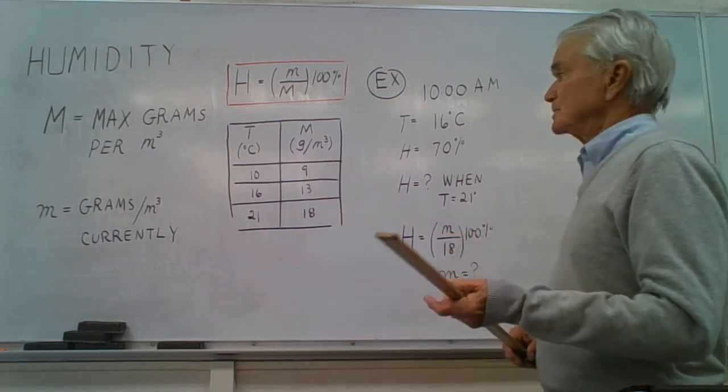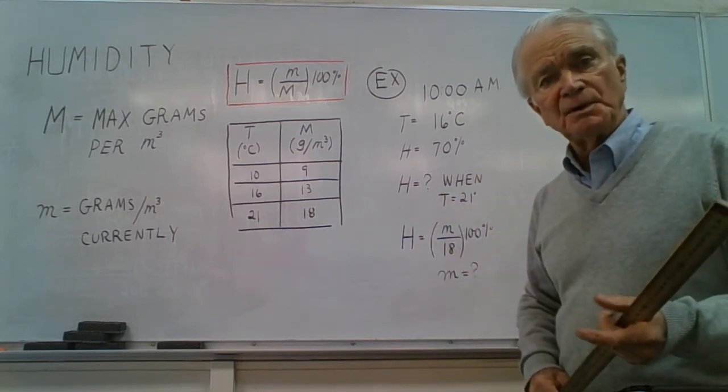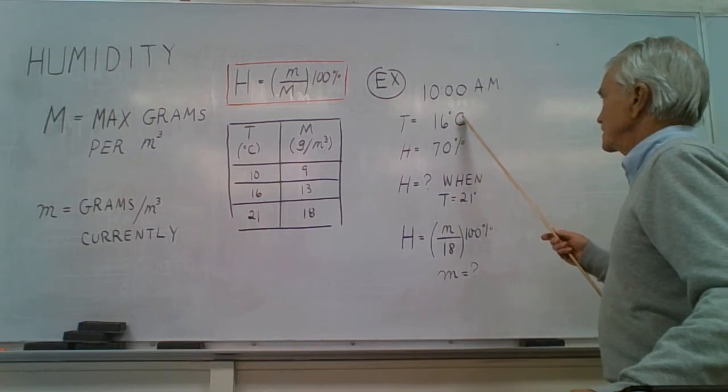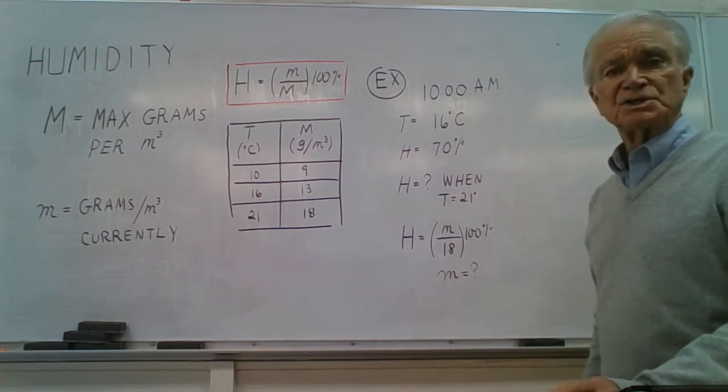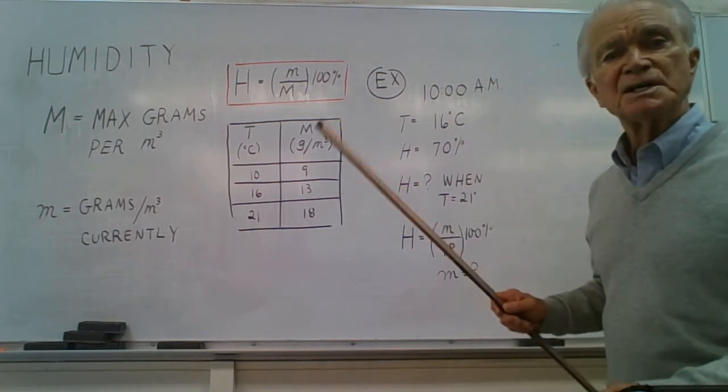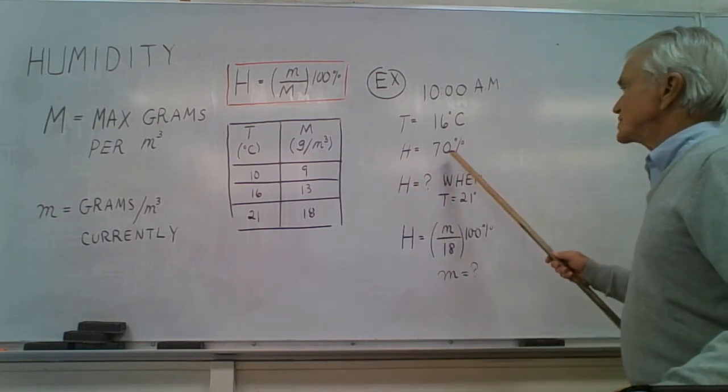Now let's consider a simple example. Suppose at 10 a.m. on a particular morning the temperature outside is 16 degrees Celsius and it's measured to have a humidity of 70 percent.